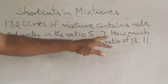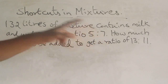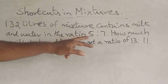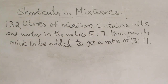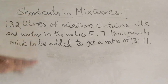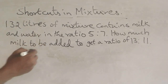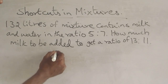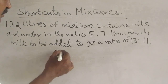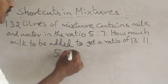5 plus 7 is 12. The ratio components are 5 for milk and 7 for water.